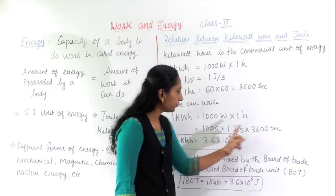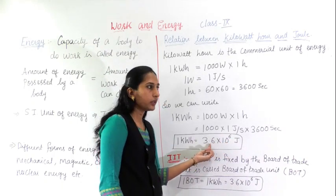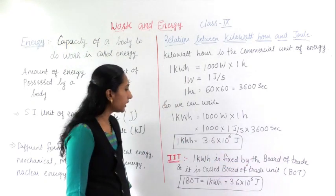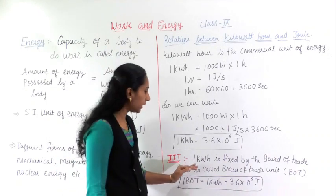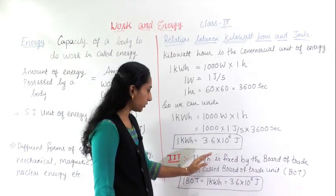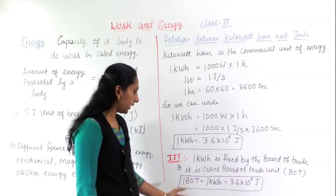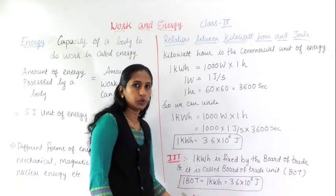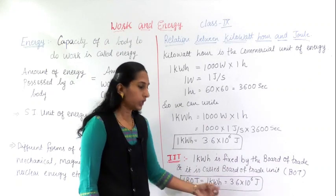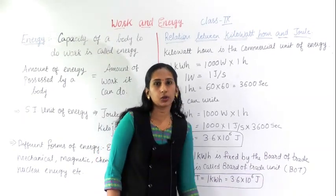Counting the zeros — there are five zeros, and with the factor of 3.6 and shifting the decimal point, we get 3.6 into 10 raised to 6 joules. So one kilowatt hour equals 3.6 × 10⁶ joules. This unit is fixed by the Board of Trade, so it is also called the Board of Trade unit — one BOT equals one kilowatt hour, which equals 3.6 × 10⁶ J. It can be called one unit, one BOT unit, or one kilowatt hour.